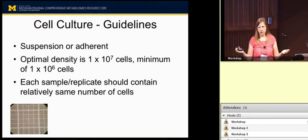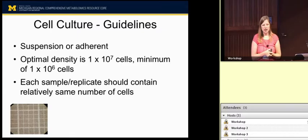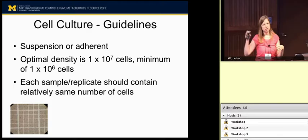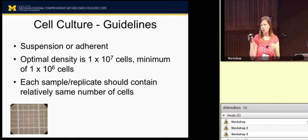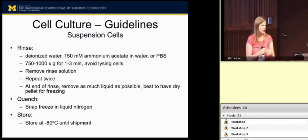For cell culture, you have suspension cells or adherent cells. Optimally, we say about a million cells at least. The main thing is that you want your groups to be equal — if you have replicates or different conditions such as a treatment, try to keep the cell number the same. If you have drastically different cell numbers across your conditions, your cells might be in a different growth phase at your time of collection. You really want to keep that consistent to decrease any variability among your samples.